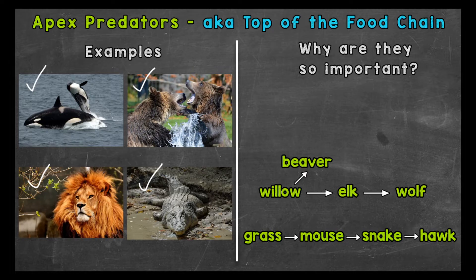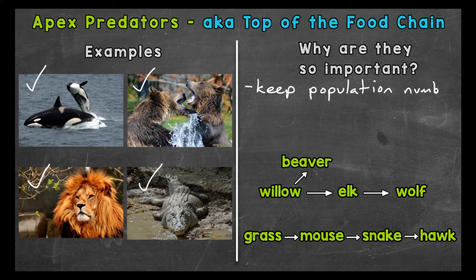Apex predators keep population numbers in check. Herbivores, for example, can deplete plant populations — grasses, fields, etc. That will eventually lead to a crash of that population due to a lack of food brought about by that imbalance. Prey populations and ecosystems in general are healthier with healthy predator numbers.